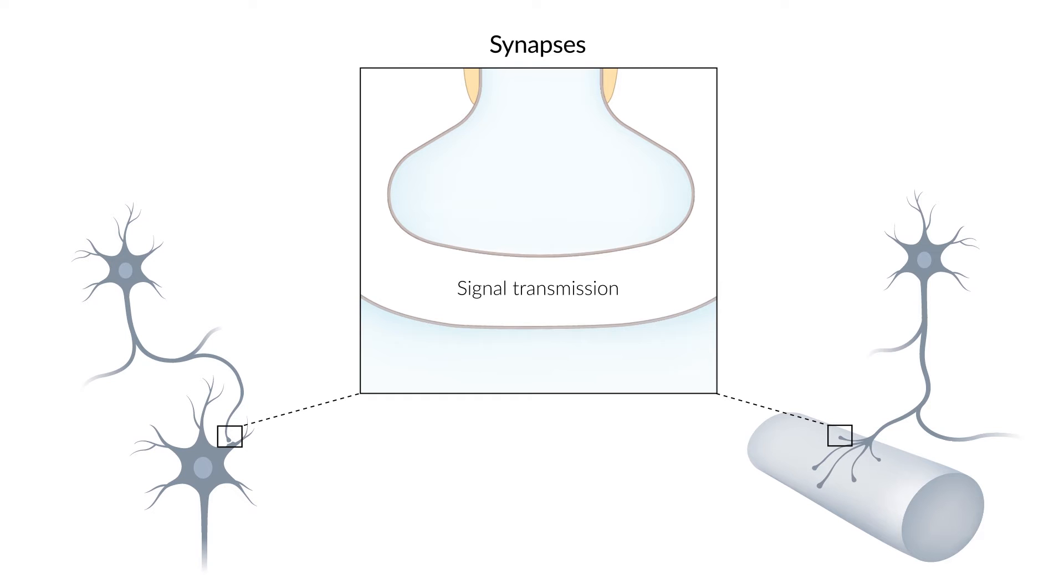Synapses transmit signals. A single neuron can have one to several thousand synapses. There are two types, chemical and electrical synapses.